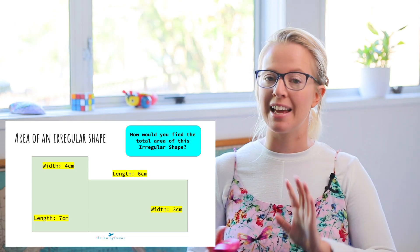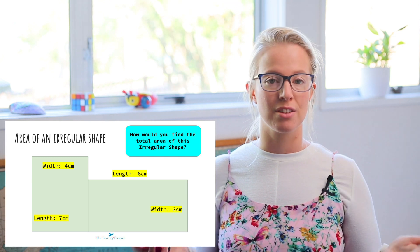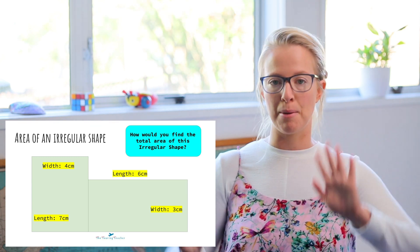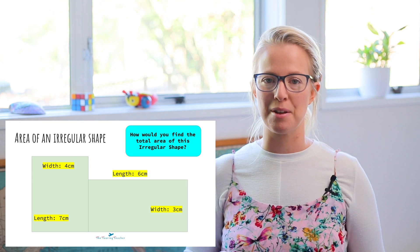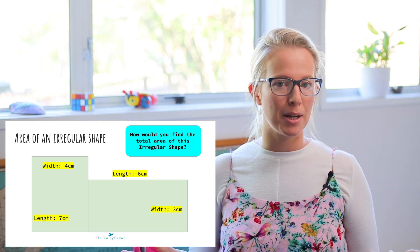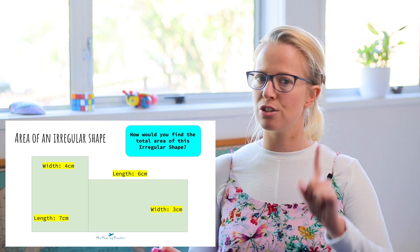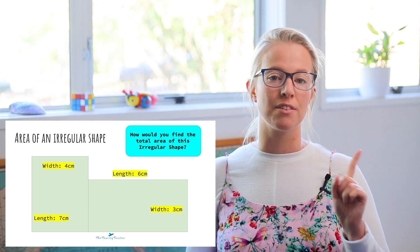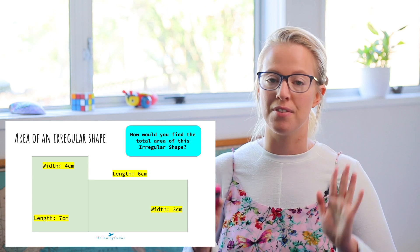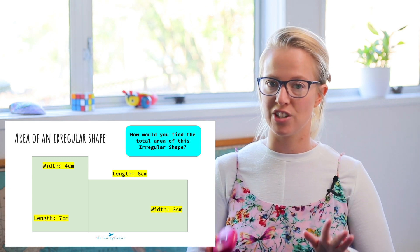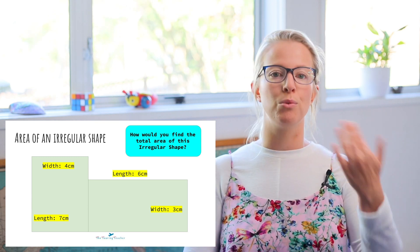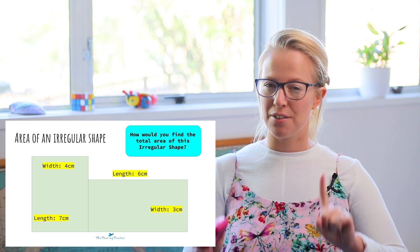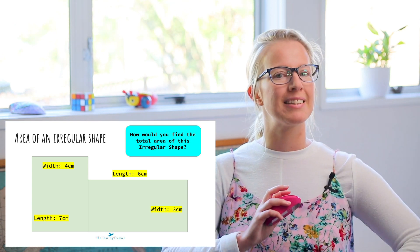So we're going to be looking at irregular shapes — this is when it's not just a straightforward rectangle, it might be a bit of a mishmash put together. I'm going to leave this one up on the screen. Using the knowledge that you've learned from the last bits, I want to see if you can figure out the area of this irregular shape. Once you've had a go, we'll go through how you can figure it out. So pause the screen here, see if you can figure it out, and then we'll come back together.